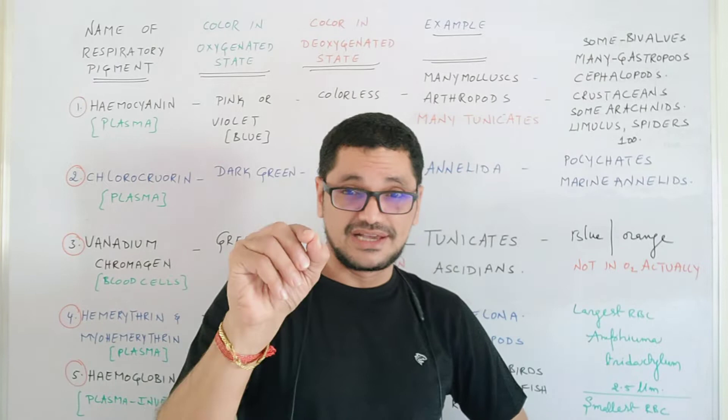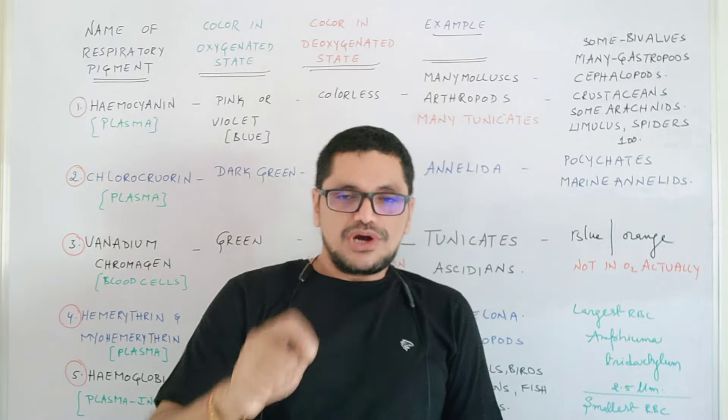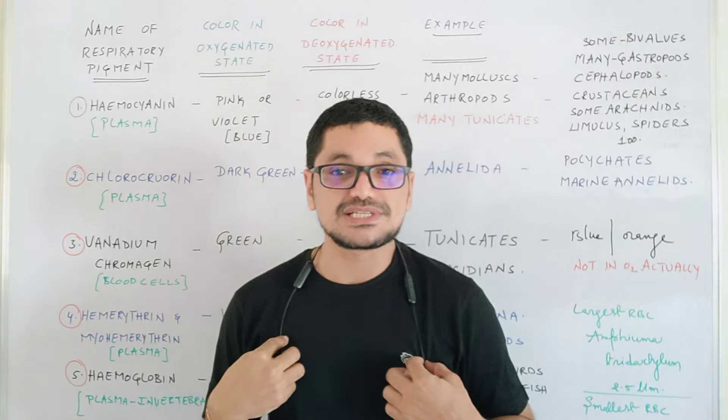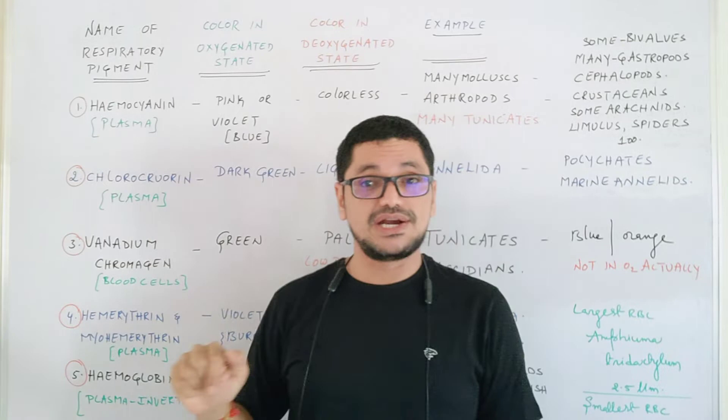These are the examples where hemocyanin is present. Another important character: hemocyanin is present in plasma. In the case of vertebrates, the respiratory pigment is present in blood cells — that is the reason why we use the word red blood cells. Whereas in the case of invertebrates, most obviously this respiratory pigment is present dissolved in plasma.